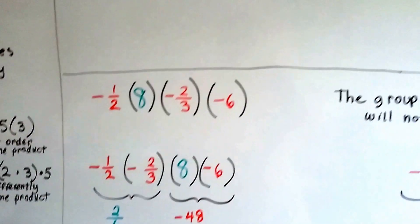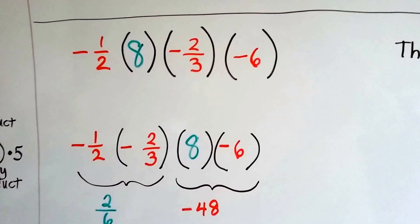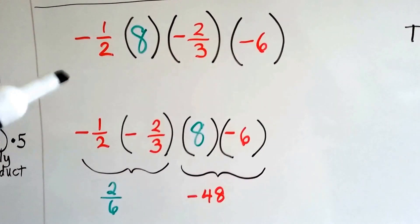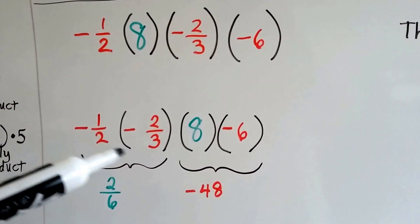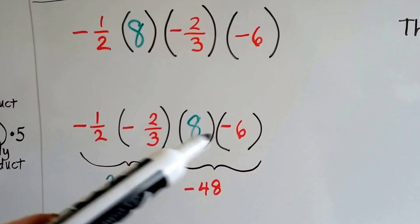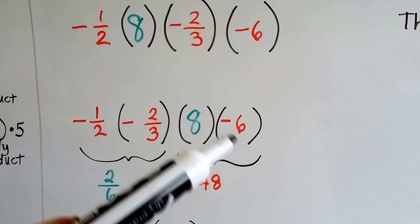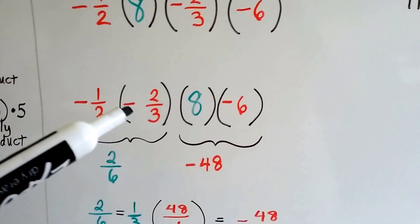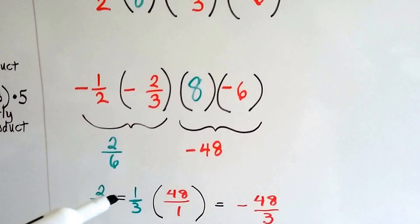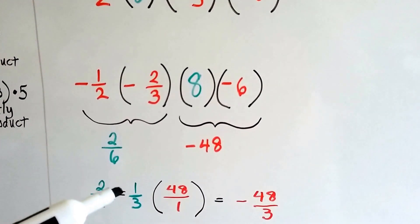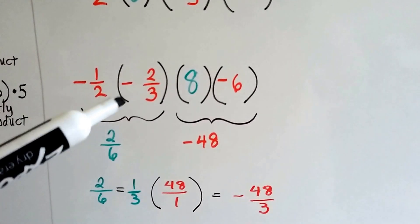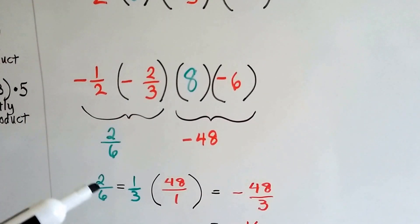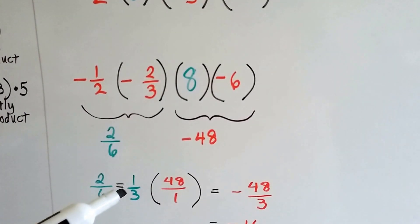If we've got four rational numbers like this and we've got some fractions, we can move the fractions together and the whole numbers together like this, and multiply the fractions together. We can get 2 over 6, which simplifies to 1 third — 2 times 1 is 2, 2 times 3 is 6, so 2 over 6 simplifies to 1 third.